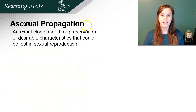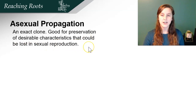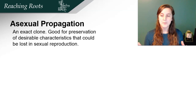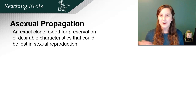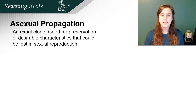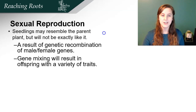Now we're going to move on to asexual propagation. This is an exact clone. This is really good if you're wanting to preserve a desirable characteristic that could be lost in sexual reproduction. If you cross a plant to another plant, the plants might not be exactly the color you're looking for or the exact taste. So if you want to exactly make a clone of the plant, you will use asexual propagation.